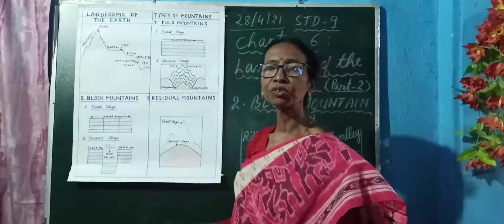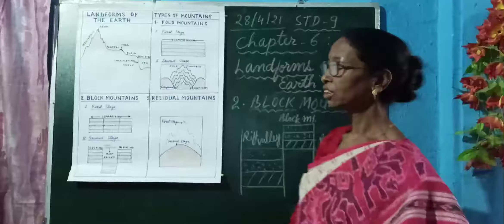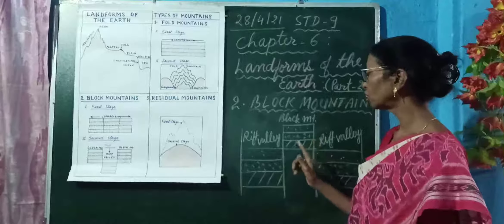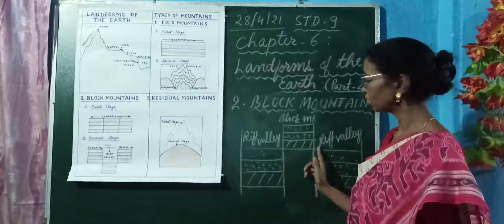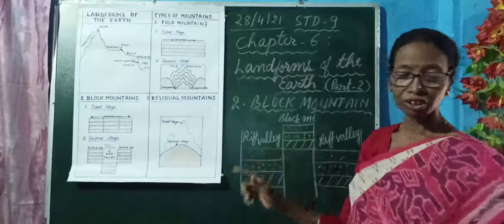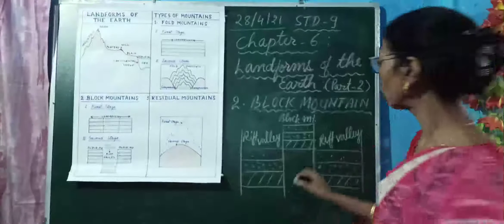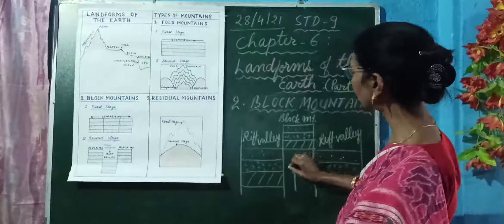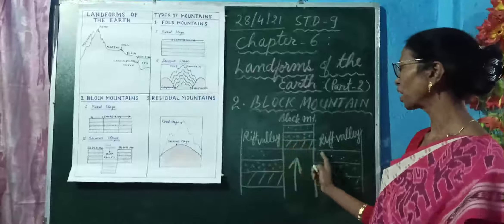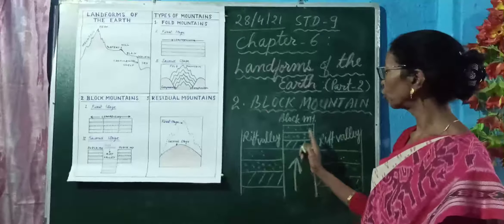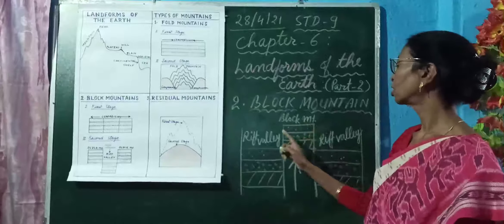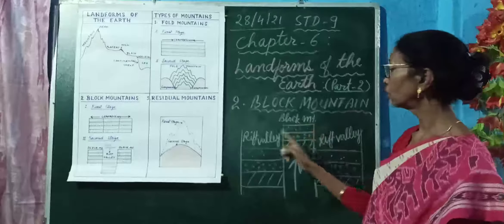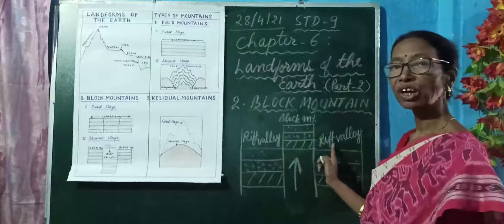Block mountains also form in a different way. When the landmass between two parallel cracks upraises due to vertical compressional force — when upward movement takes place in the land between the two parallel cracks — it forms block mountains. And beside this upraised block mountain, two rift valleys are formed.